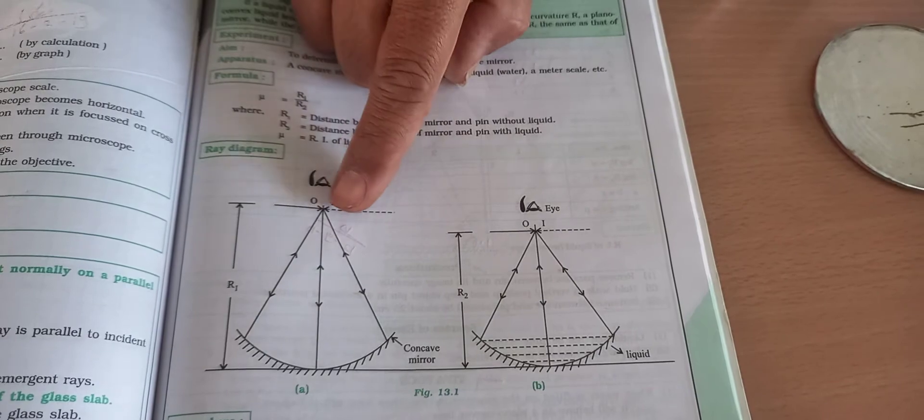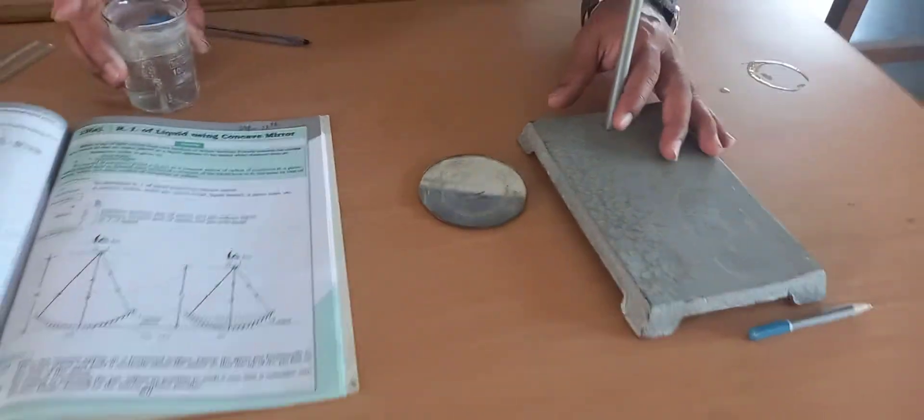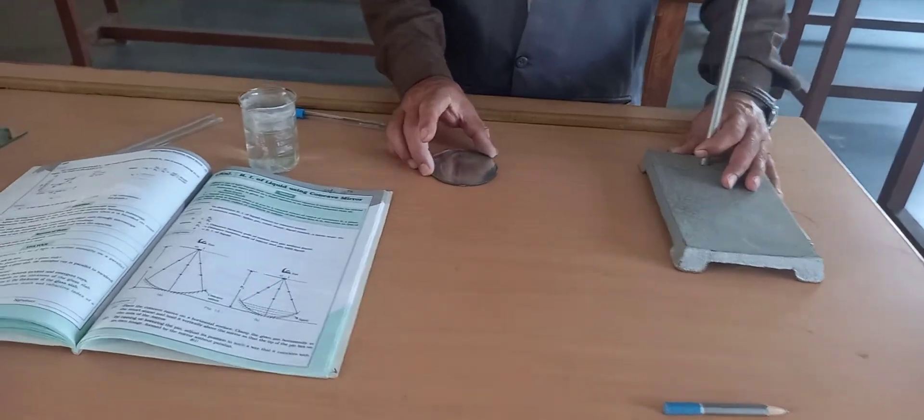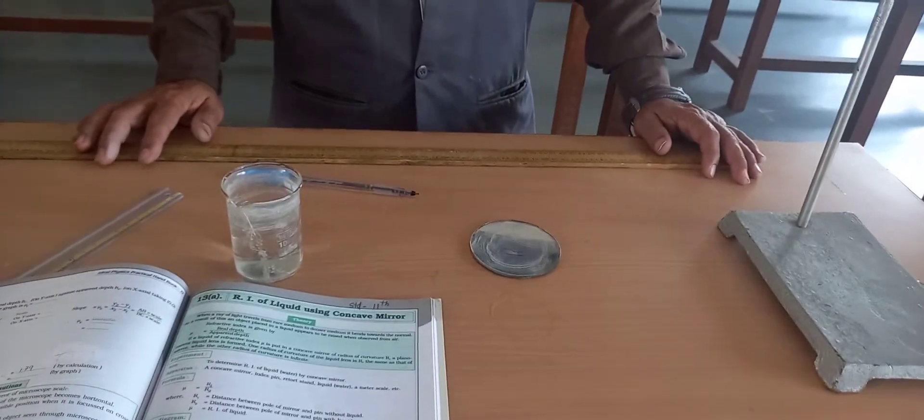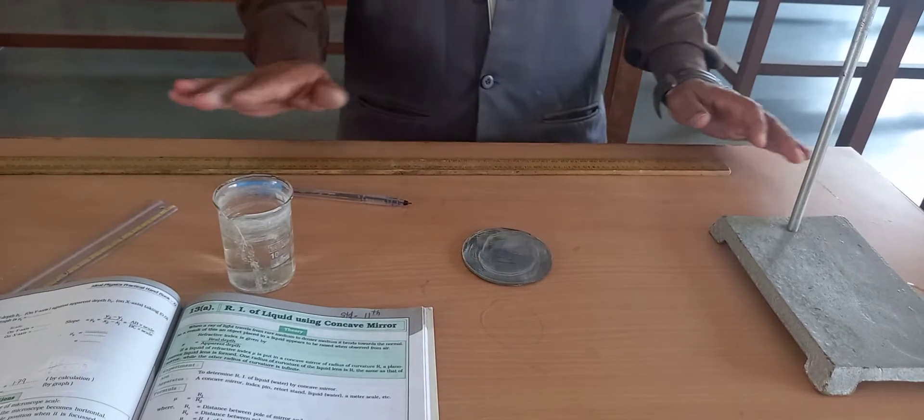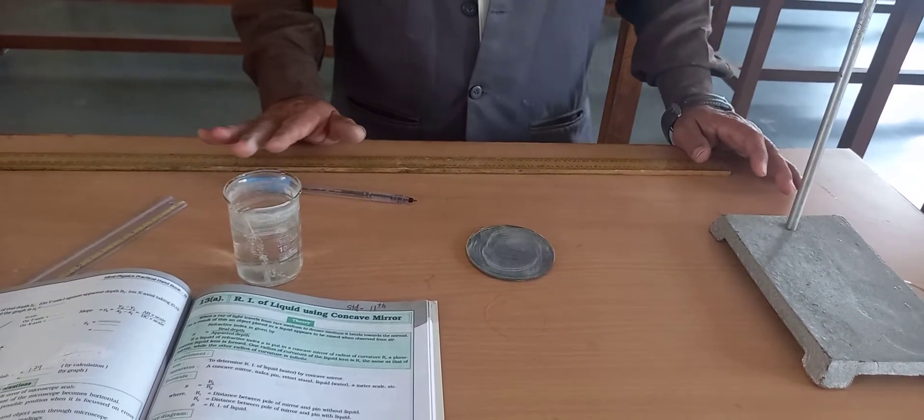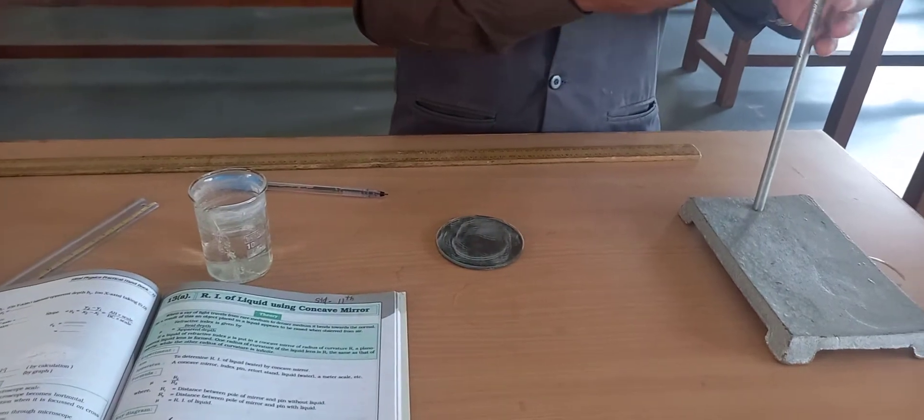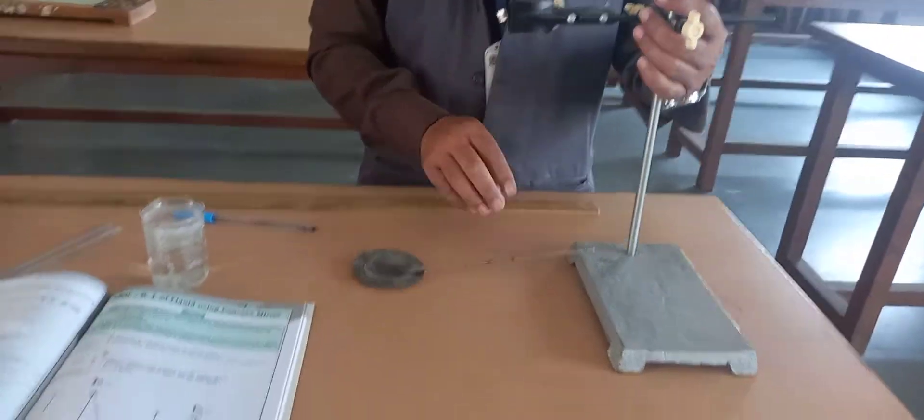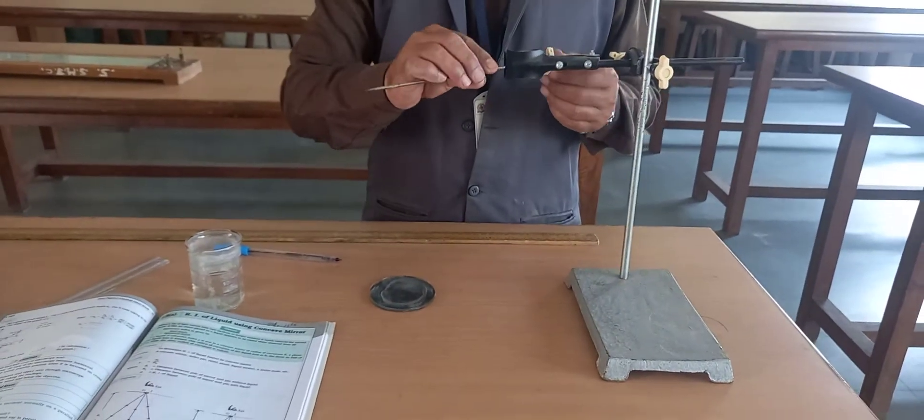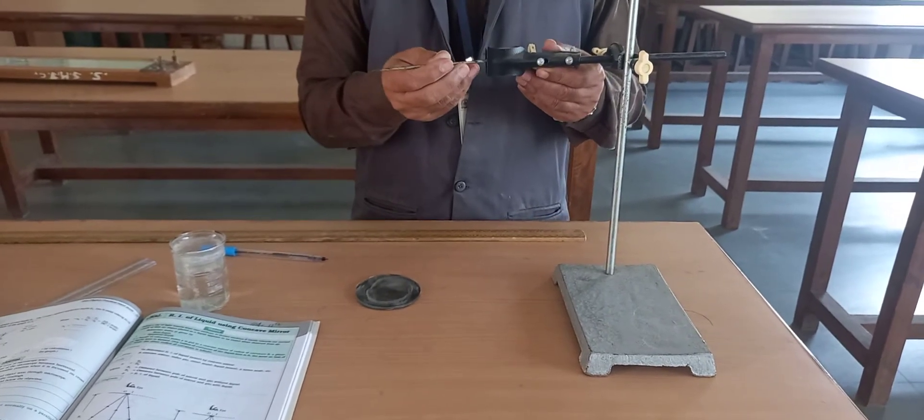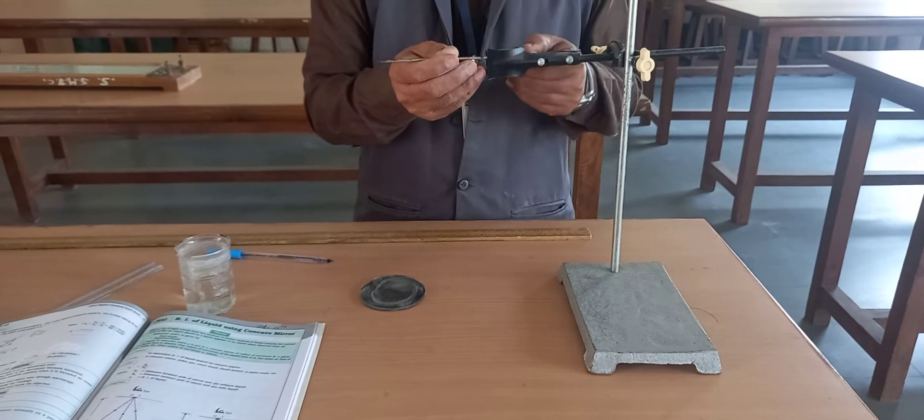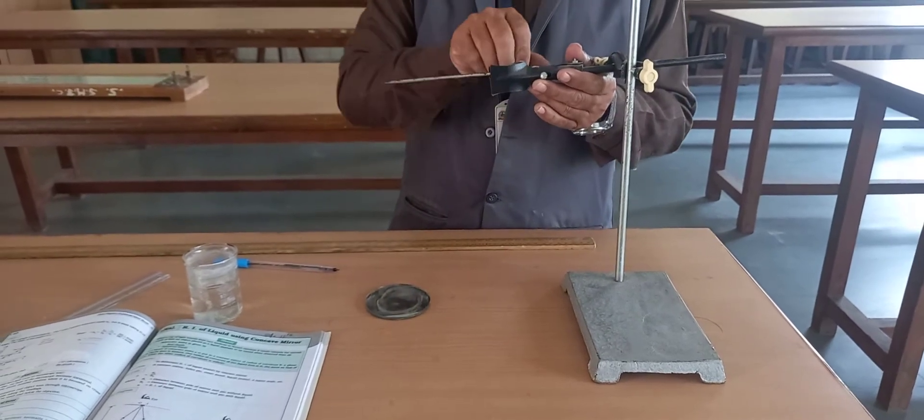Place the concave mirror on a horizontal surface - it can be the floor or table surface, anything which is exactly a plane horizontal surface. Second step: place the index pin horizontally and tie it properly.